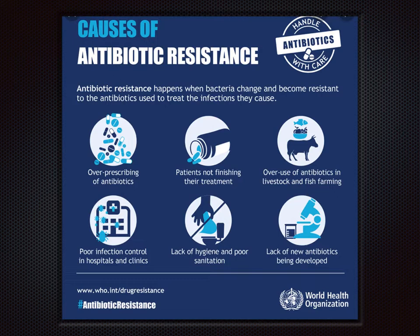The fourth cause is poor infection control in hospitals and clinics. If infection control in hospitals is not good, you come to get better but leave even sicker — someone with a superbug infection in the hospital can pass it on to you. The fifth cause is lack of hygiene and poor sanitation across the country, which causes infections to spread more rapidly — that is why Swachh Bharat Mission is such a major national mission. The sixth cause is lack of new antibiotics being developed; more research and development is needed to create drugs that can kill these superbugs. These are the six causes WHO has identified.